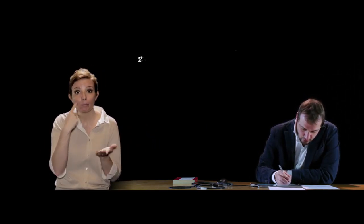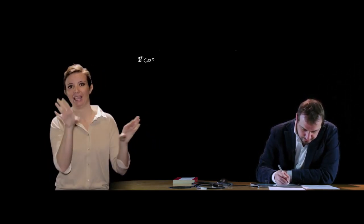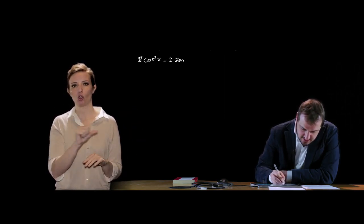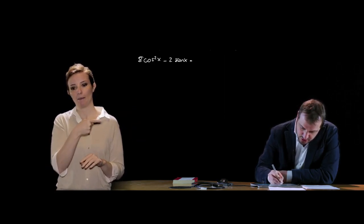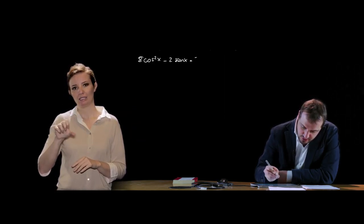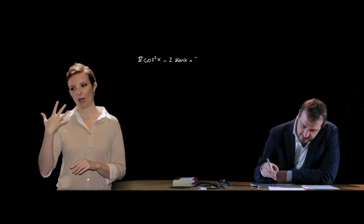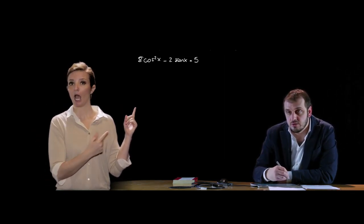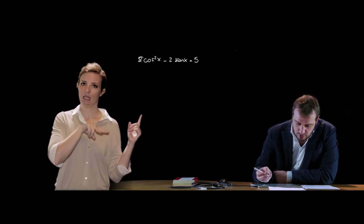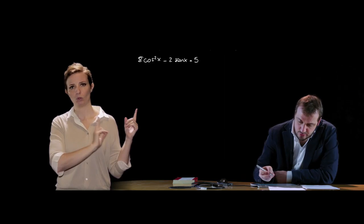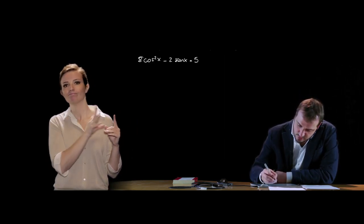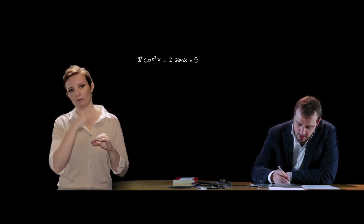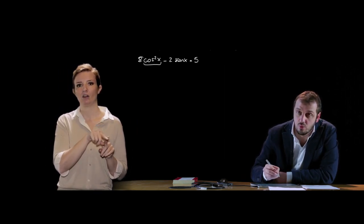Facciamo un esempio: 8 cos² x − 2 sen x = 5. Questa equazione goniometrica è caratterizzata sia dal seno che dal coseno; dobbiamo portare tutto in seno, trasformando cos² x in 1 − sen² x.